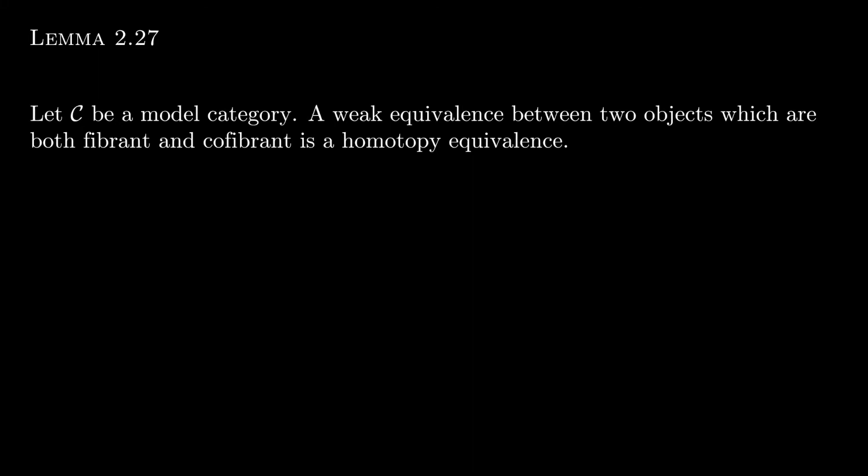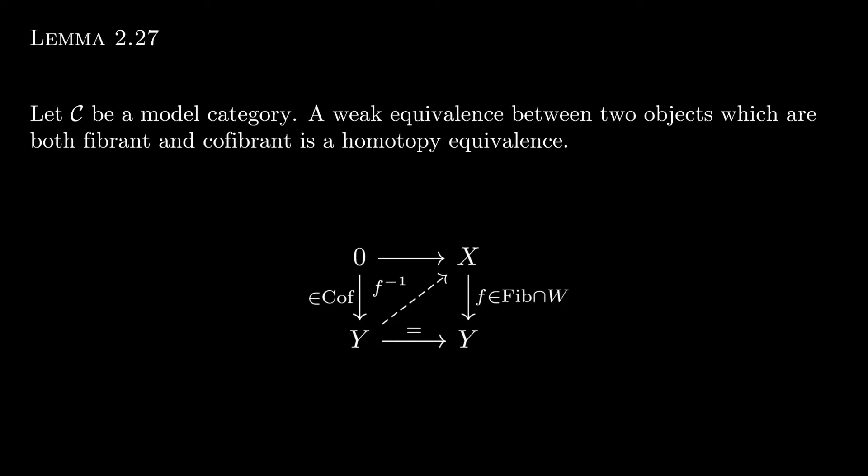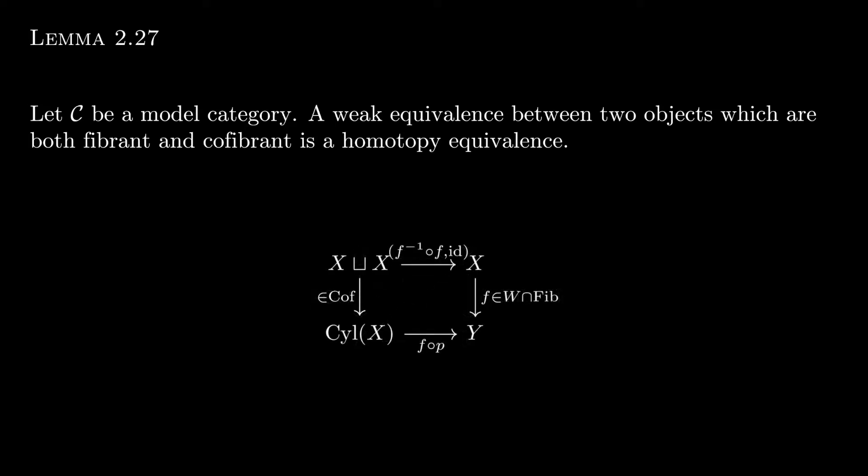Suppose f from X to Y is an acyclic fibration between fibrant-cofibrant objects. The following diagram lifts, so f has a right inverse. The lift exists because the map on the left is a cofibration since Y is by assumption cofibrant. It remains to show this map is also a left inverse up to left homotopy. Pick a cylinder object on X; we have a commuting square where the left map is a cofibration since cylinder objects factor the codiagonal as a cofibration followed by an acyclic fibration. Staring at this diagram reveals the desired left homotopy between f-inverse composed with f and the identity.